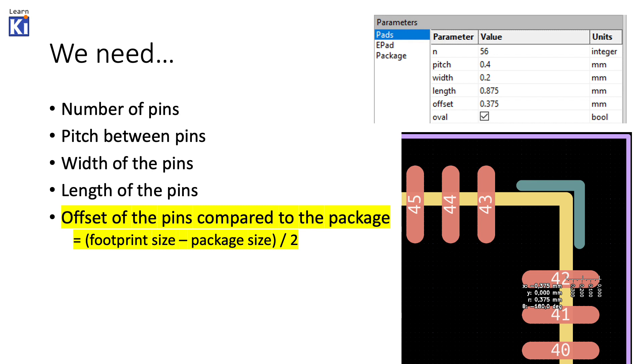And then we can see in the left column what kind of data we need. And they're quite understandable, except the offset. Which is actually the distance between the outer edge of a pad and the edge of the package. I added a little clarification here. This is 0.375. And I got that from the calculation from the footprint size minus the package size. So, that's 7.75 minus 7, divide it by 2, and then you get this number.